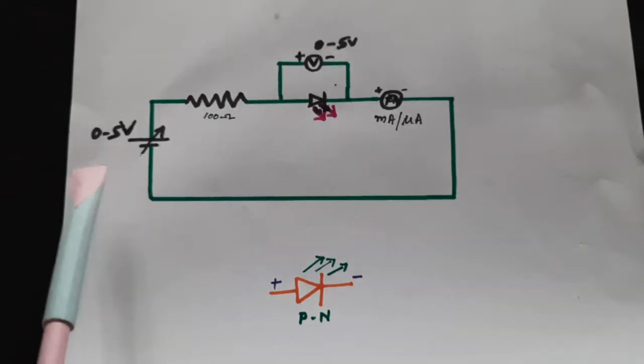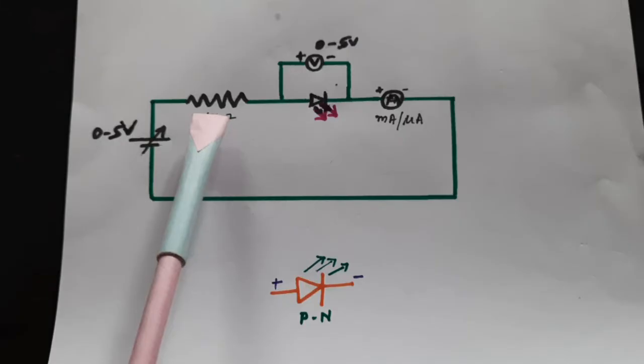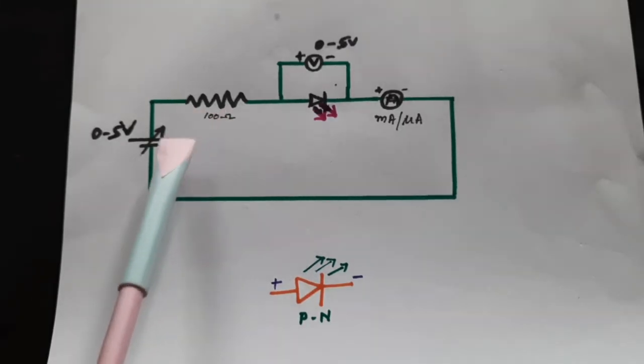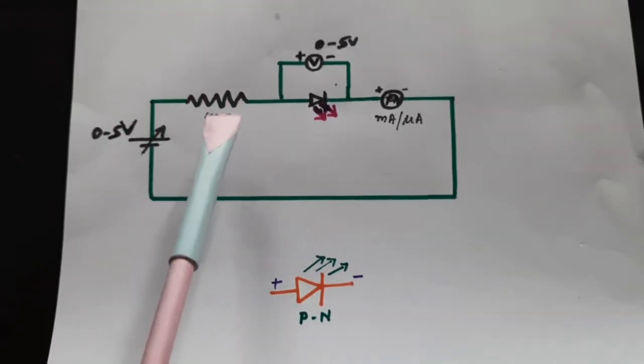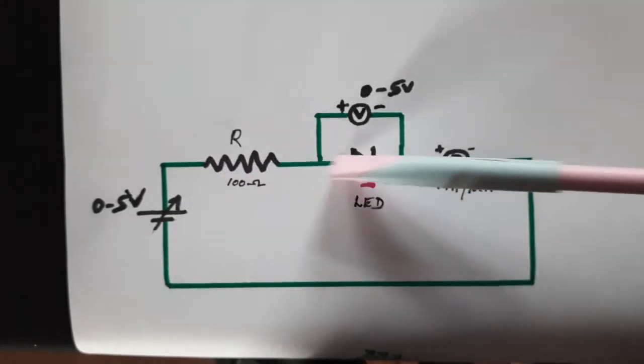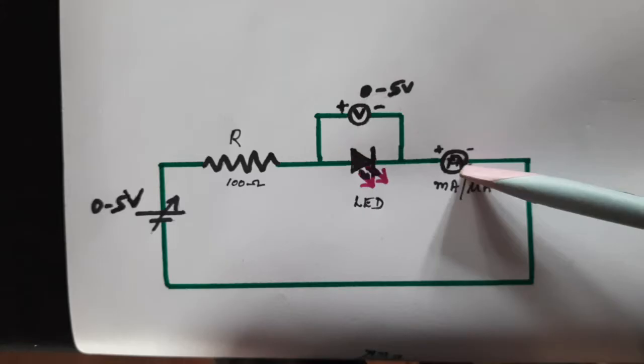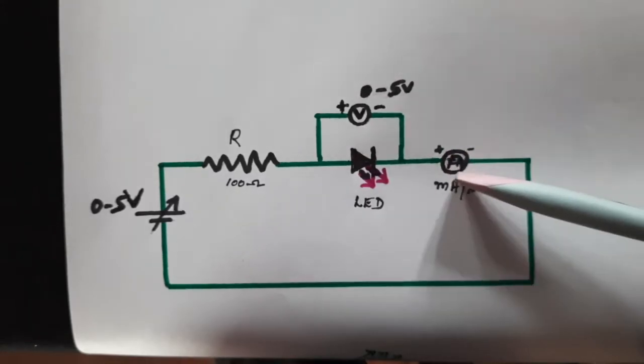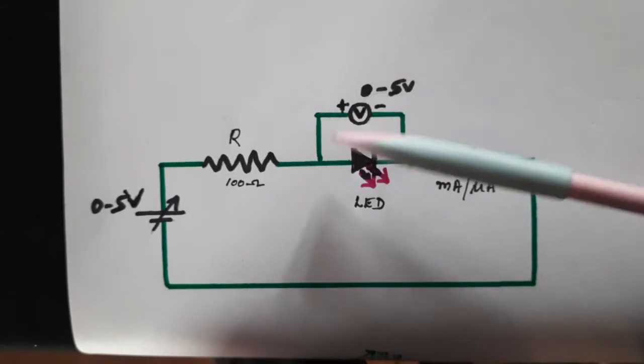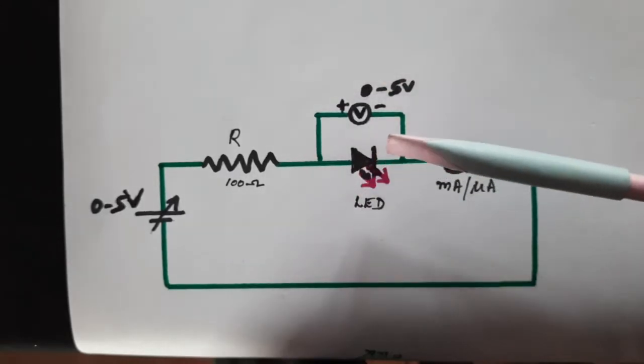What we need is a voltage up to say 5V. Even if the source is bigger, it's fine because we are going to vary it. This is a resistance, say 100 ohm resistance, just to limit the current in the circuit. This is the LED connected in series with the power supply. This is a milliammeter to record the current in the circuit and this is a voltmeter connected across the LED to know the voltage drop across the LED when the LED is lit up.